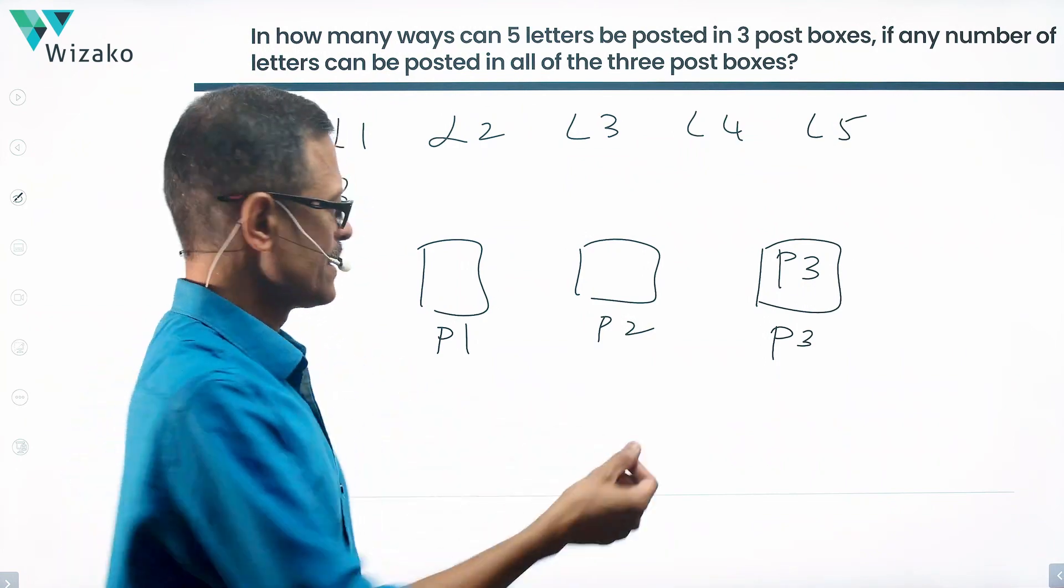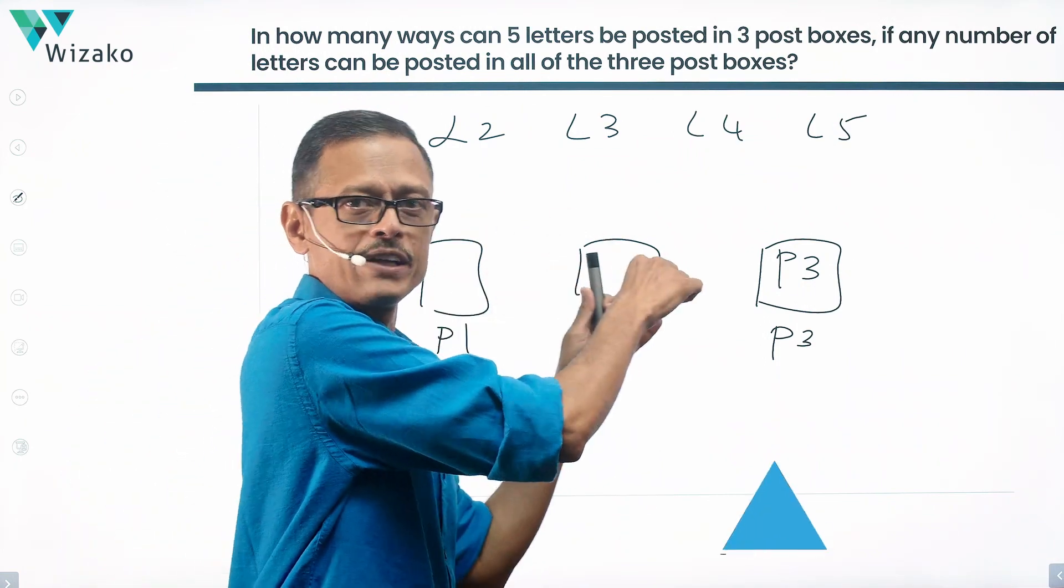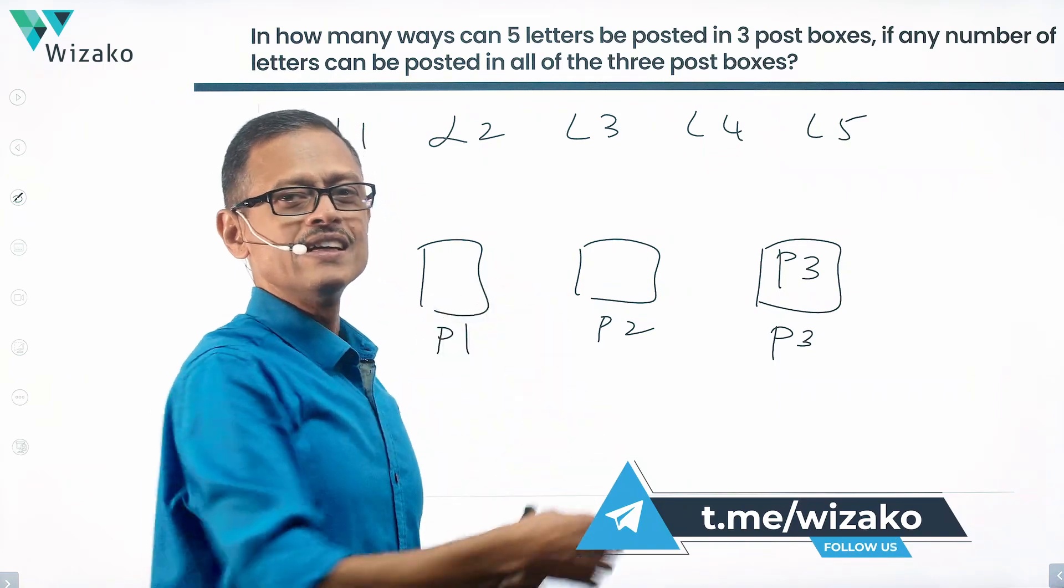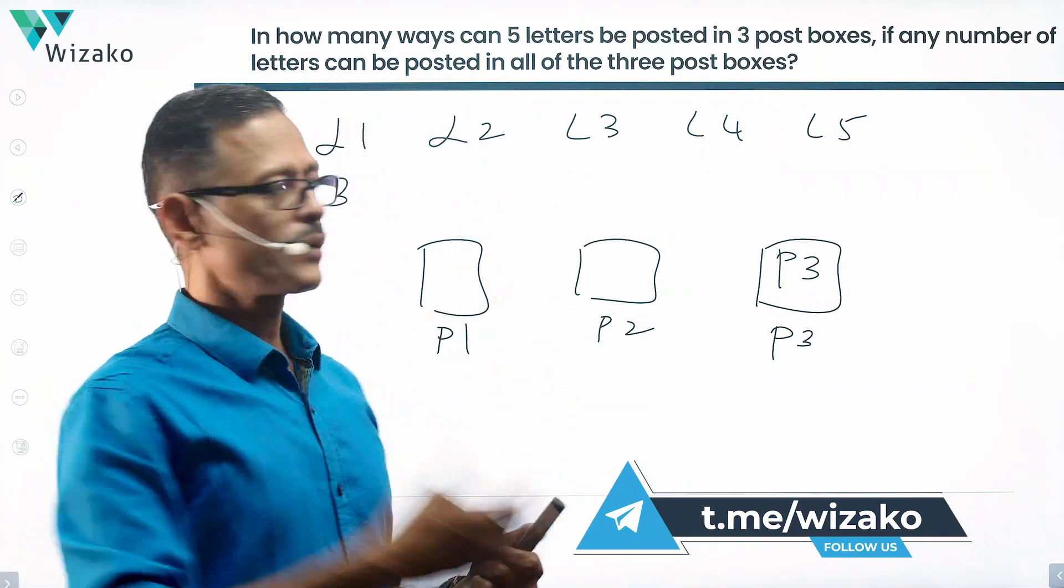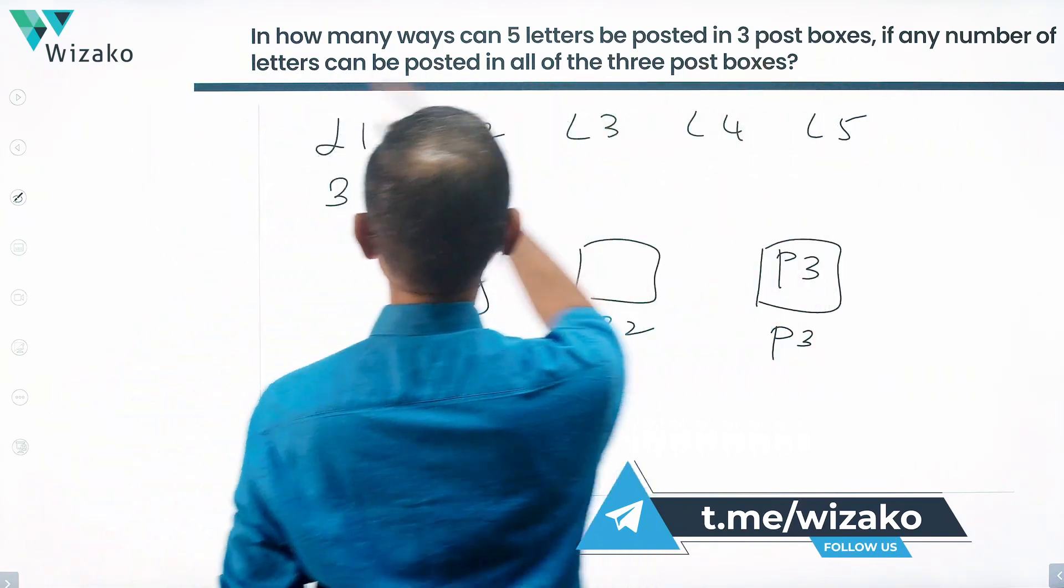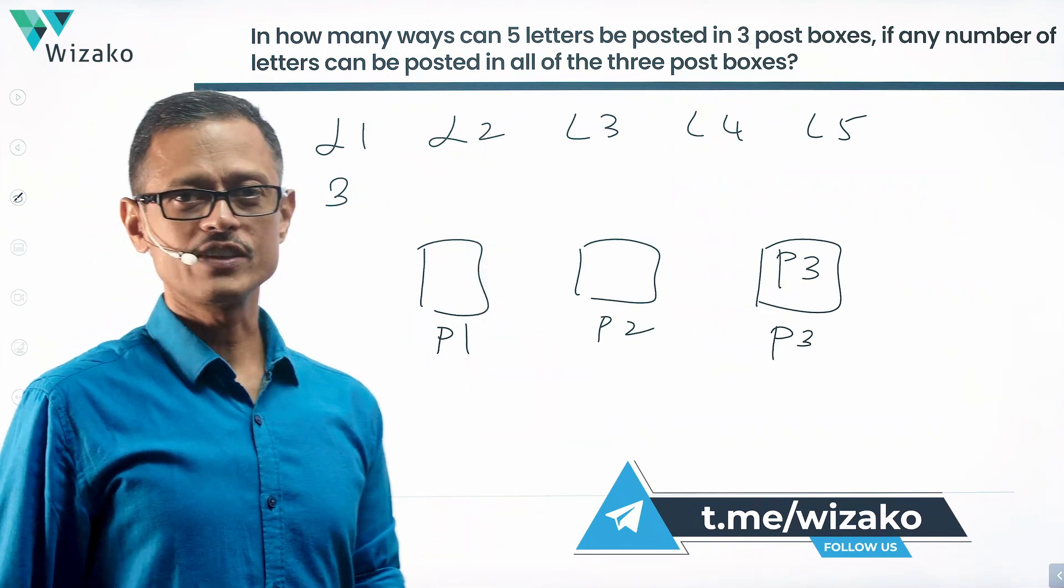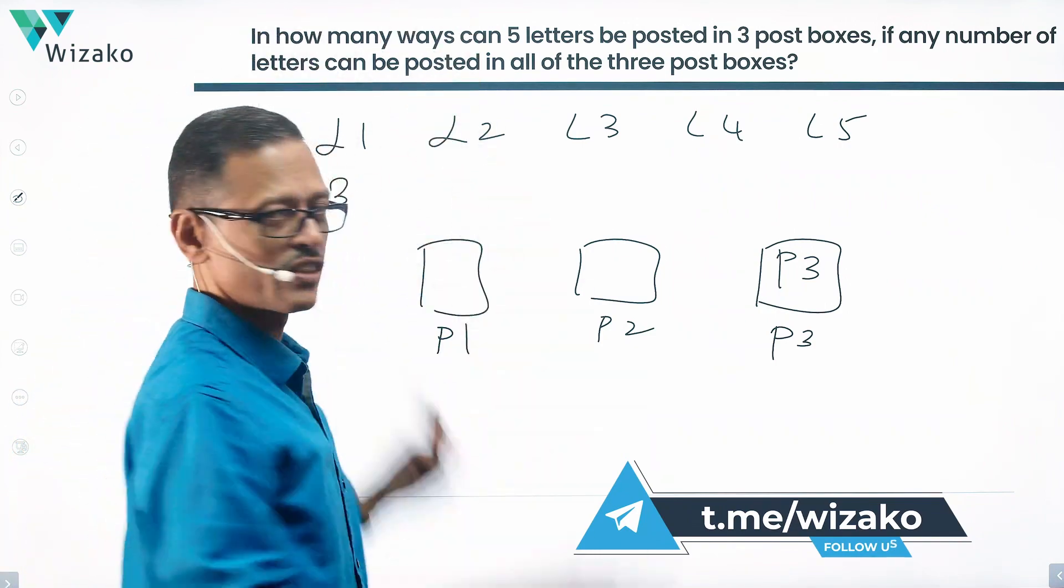Second letter, posted the first one, let's say in P1. Should it go to P2, P3, or can it also go into P1? All of these letters can go in. Essentially, it says that any number of letters can be posted in all of these boxes. So I can post all five into the first box itself.